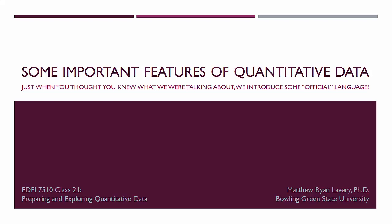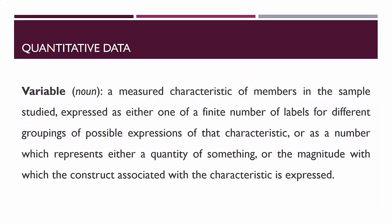Quantitative data is data made up of variables. A variable is a measured characteristic of members in the sample study, expressed as either one of a finite number of labels for different groupings of possible expressions of that characteristic, or as a number which represents either a quantity of something, or the magnitude with which the construct associated with the characteristic is expressed.